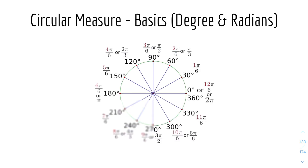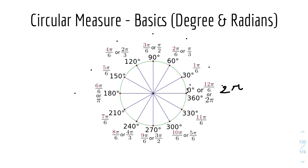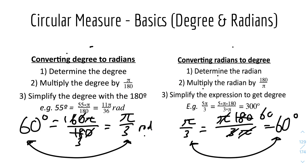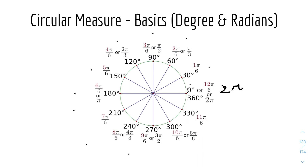Here are some degree and radian equivalences to remember. 0° equals 0 or 2π (since 0° and 360° are the same position on a full circle), and common angles like 30°, 60°, 90°, 120° each have corresponding radian values. You don't have to memorize all conversions — you can just use the multiplication method shown to convert between radians and degrees.